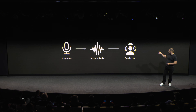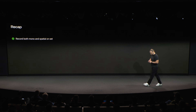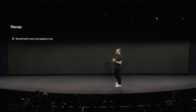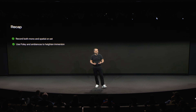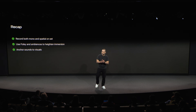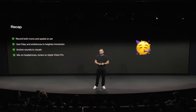And with that, we've made it to the end of our workflow. So what have we learned? First, make sure you record both mono and spatial on set. Second, use Foley and ambiences to build on top of your spatial recordings and to heighten immersion. Anchor sounds to visuals instead of just placing them in the center. Mix on headphones, review on Apple Vision Pro, and finally, have fun and experiment. Thank you very much.